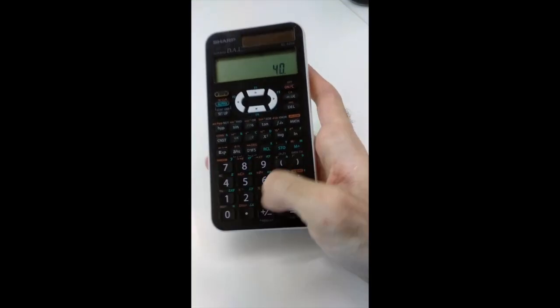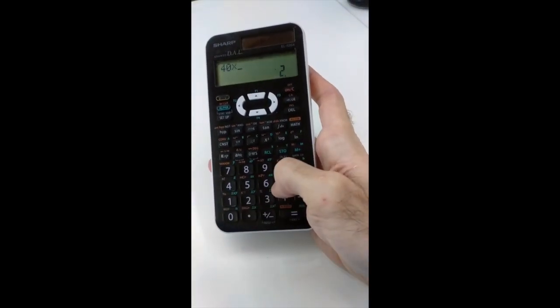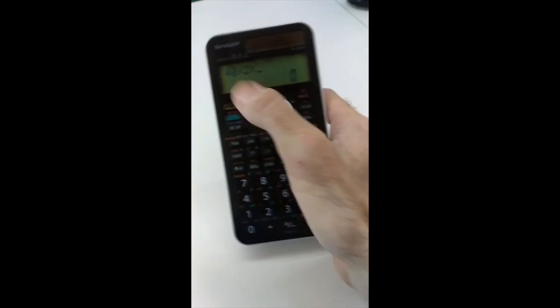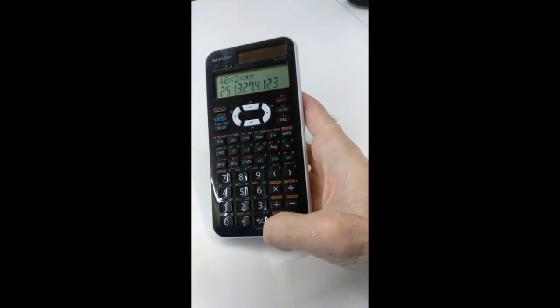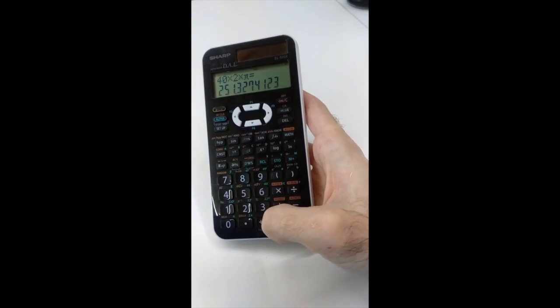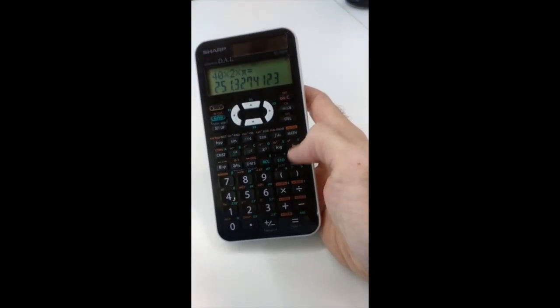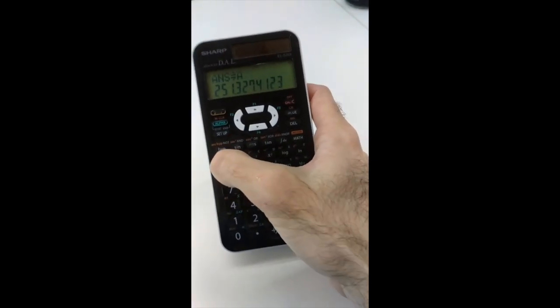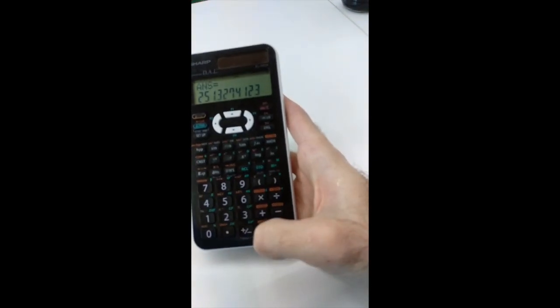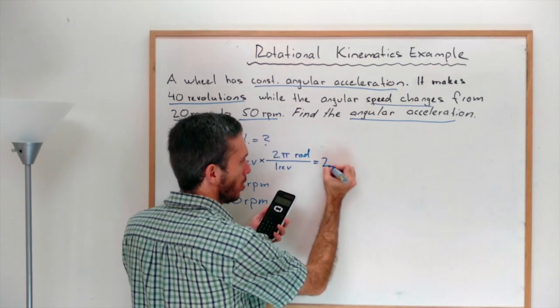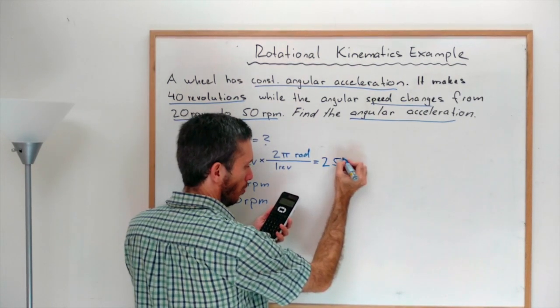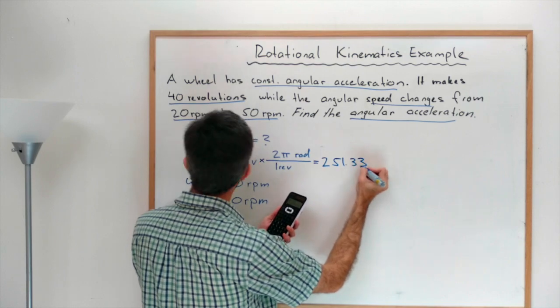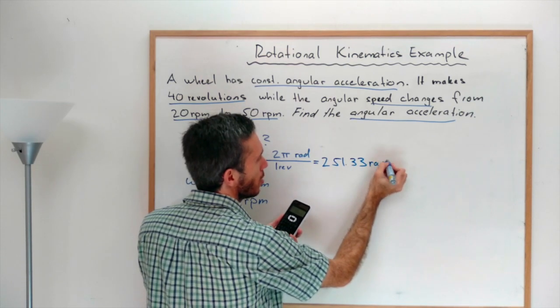40 times 2 times pi is 251, and I'm gonna save this in the storage button in my variable A. 251.33 rads.